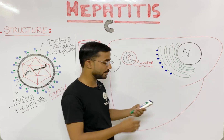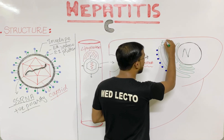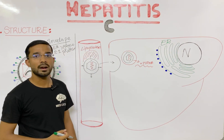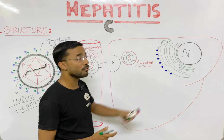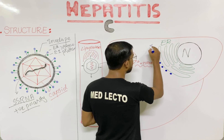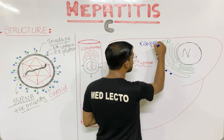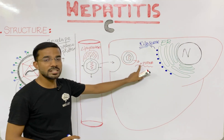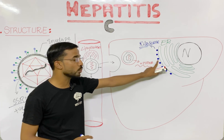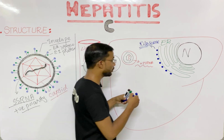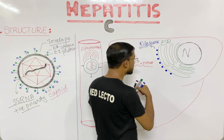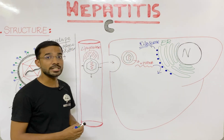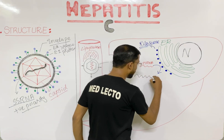This positive polarity single-stranded RNA goes towards the ribosomes on the rough endoplasmic reticulum. The rough endoplasmic reticulum has many ribosomes on its surface. The positive single-stranded RNA undergoes translation at the ribosomes, producing polyproteins — multiple proteins encoded in one continuous sequence.